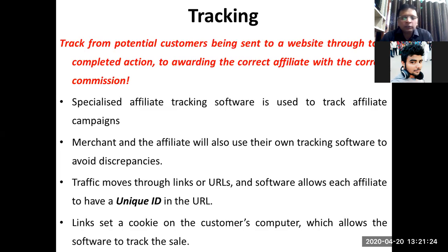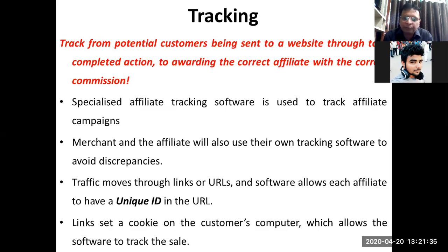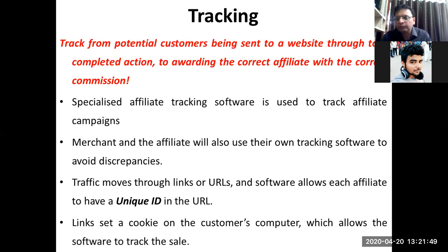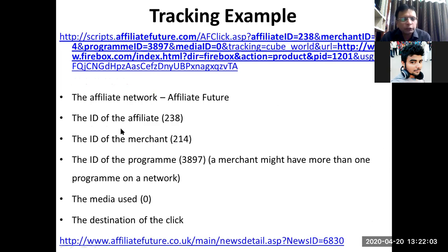The unique name for every website — the URL — is there, and within that there could be some additional information shared when the visitor is going from the affiliate website to the merchant website. That is called the unique ID of each and every transaction. Links set a cookie on the customer's computer system which allows the software to track the sales — whether the revenue has to be shared or not.